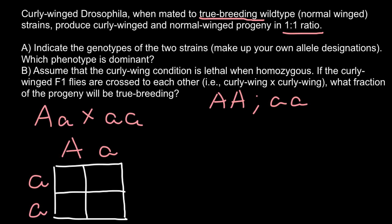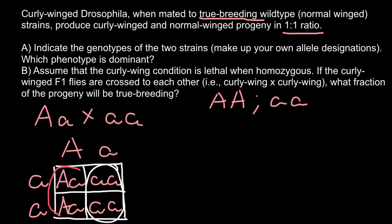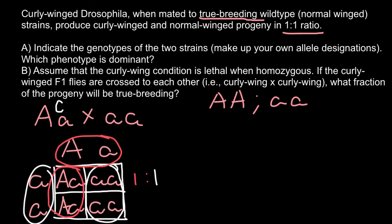In our Punnett square, wild type (homozygous recessive, 'aa') is on the left and the curly-winged genotype (heterozygous, 'Aa') is on top. The progeny genotypes are: Aa, Aa, aa, and aa. So 50% of the progeny would be wild type and 50% would produce curly wings — a one-to-one ratio. This means recessive alleles produce wild type, and curly wings result when a dominant allele is present.